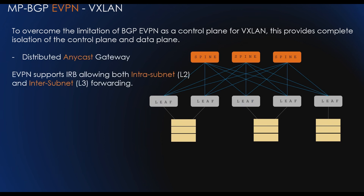EVPN supports IRB, allowing both intra-subnet Layer 2 and inter-subnet Layer 3 forwarding. Distributed anycast gateway functionality provides optimal forwarding, since end hosts can use the local gateway to send traffic outside the IP subnet. The IRB interface, which acts as a Layer 3 gateway for a tenant, can be distributed across different leaves. The default gateway extended community is needed in MAC/IP advertisement routes for IRB interfaces when different MAC addresses are configured.